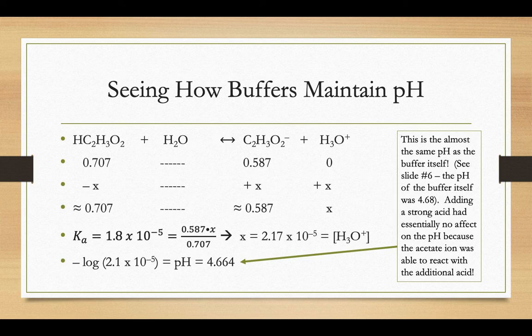It's essentially no effect on the pH because the acetate ion was able to react with the additional acid. That's why on the buffer part of a titration curve, it's an essentially horizontal line, because any of that base that you might be adding during a titration or acid that you're adding is reacting with that buffer that's happening inside that solution.